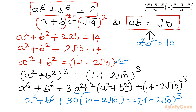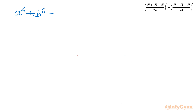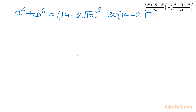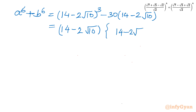Keeping a⁶ + b⁶ on the left-hand side, the rest goes to the right-hand side: a⁶ + b⁶ = (14 - 2√10)³ - 30(14 - 2√10). Factoring out (14 - 2√10): a⁶ + b⁶ = (14 - 2√10) × [(14 - 2√10)² - 30].